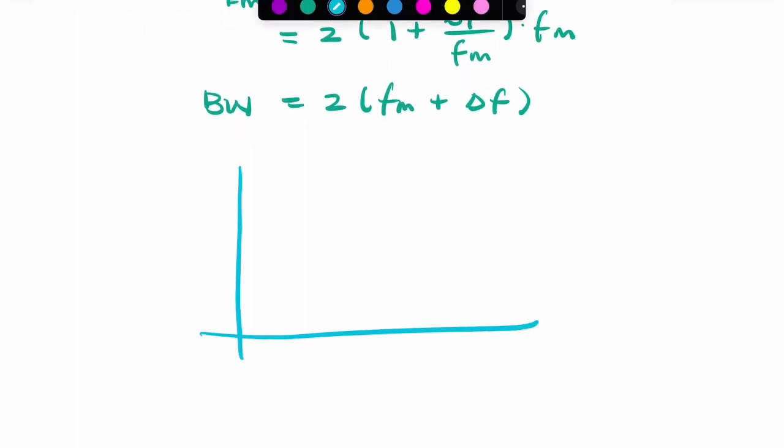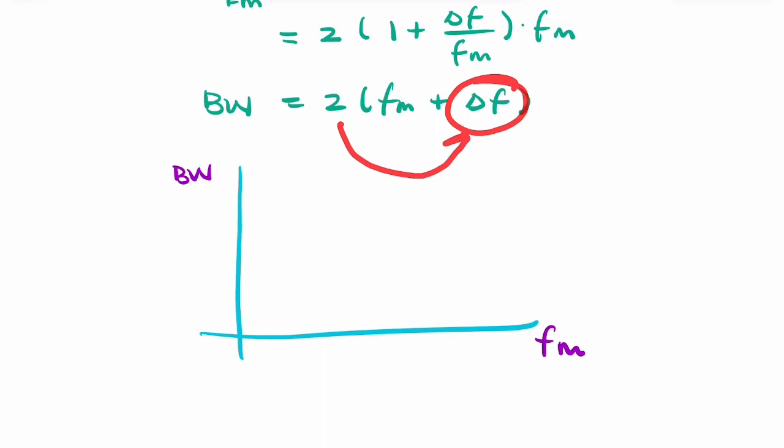If we have fm on the horizontal axis and bandwidth on the vertical axis, then you'll have a y-intercept of 2 times delta F. So your graph will look something like that, where here you have 2 delta F.